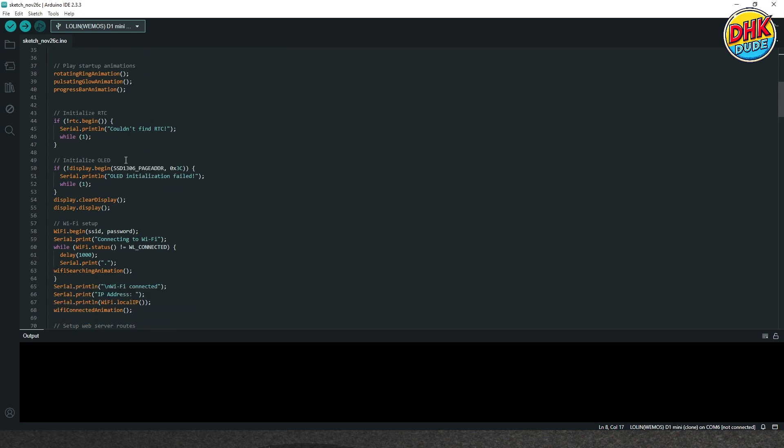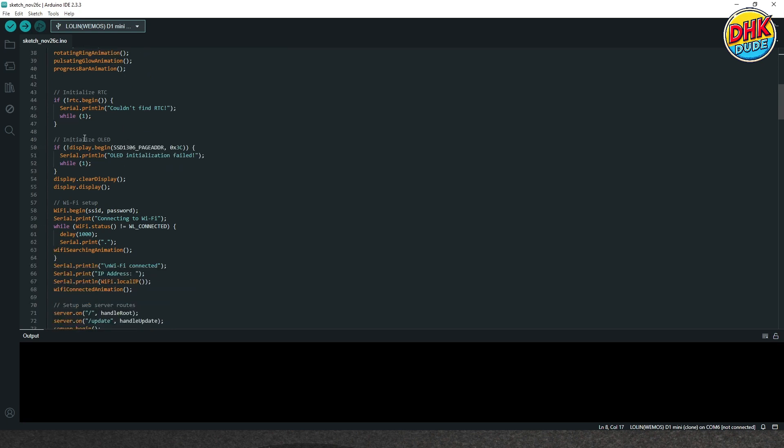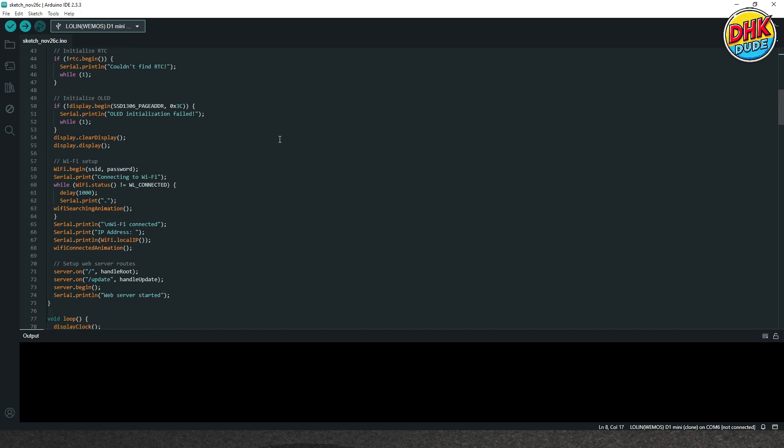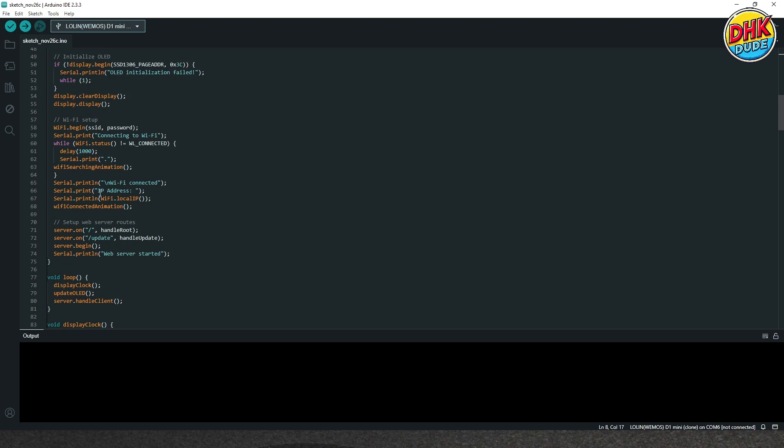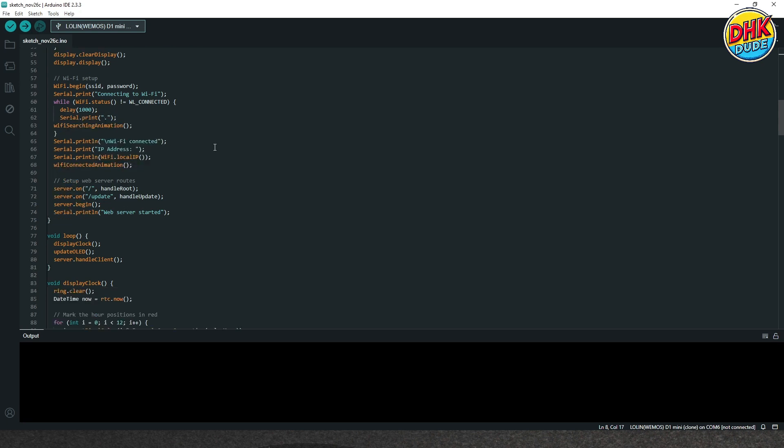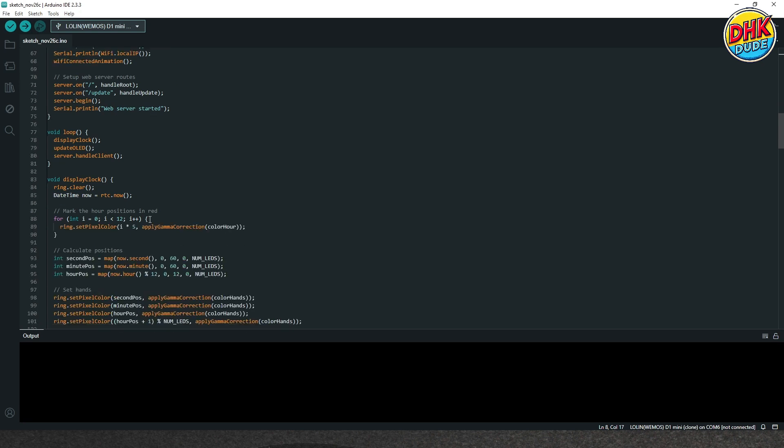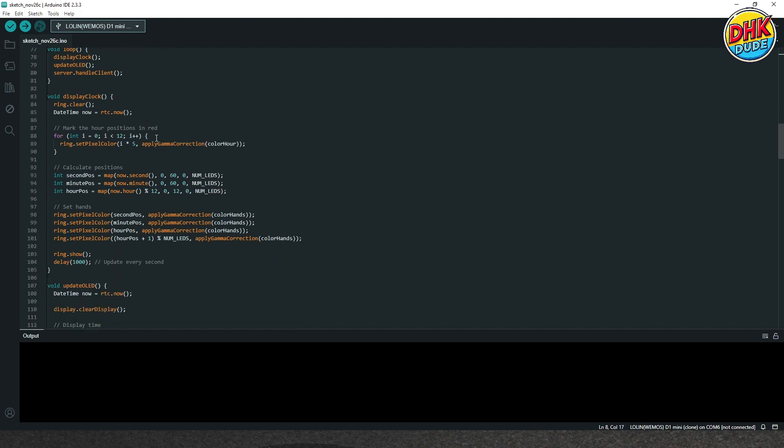Then we will initialize RTC module and OLED screen. Then we will try to connect to the Wi-Fi. If connection established, then green LED will flash three times along with IP address will be displayed in the serial monitor. And then in the loop section, we will start RTC, OLED and web server services.